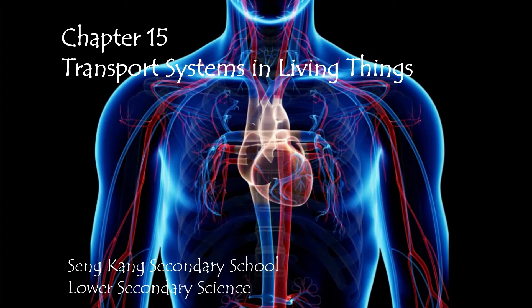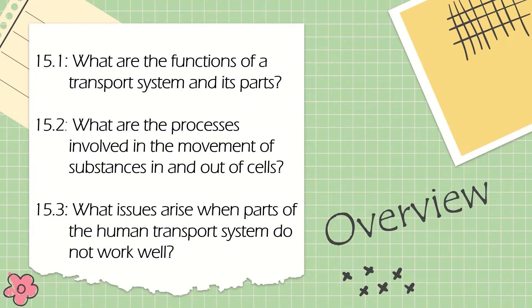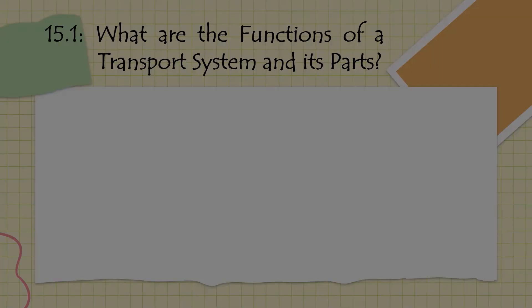As you probably already know, throughout our bodies we need to transport substances such as oxygen, water, nutrients, and so on throughout the body. In this chapter, we'll be talking about how the circulatory system in our body does that. We'll also be looking at the plant equivalent. This section comprises three different parts: 15.1 - what are the functions of the transport system and what are its different parts; 15.2 - what are the processes involved in transporting substances in and out of ourselves; and last but not least, what issues arise when parts of the human transport system do not work well.